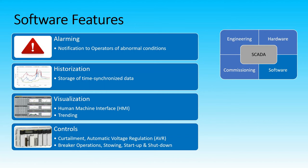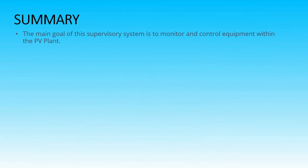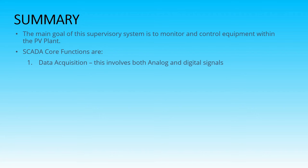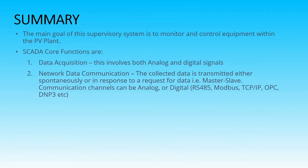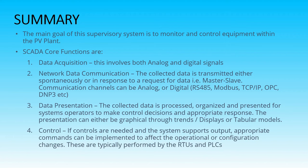For controls, ideally we would need a fast-acting and fault-tolerant grid control system. This should have features like closed-loop curtailment, power factor, reactive power, and ramp rate controls. As a summary, the main goal of this supervisory system is to monitor and control equipment within the PV plant, and its four core functions are data acquisition, network data communication, data presentation, and controls.